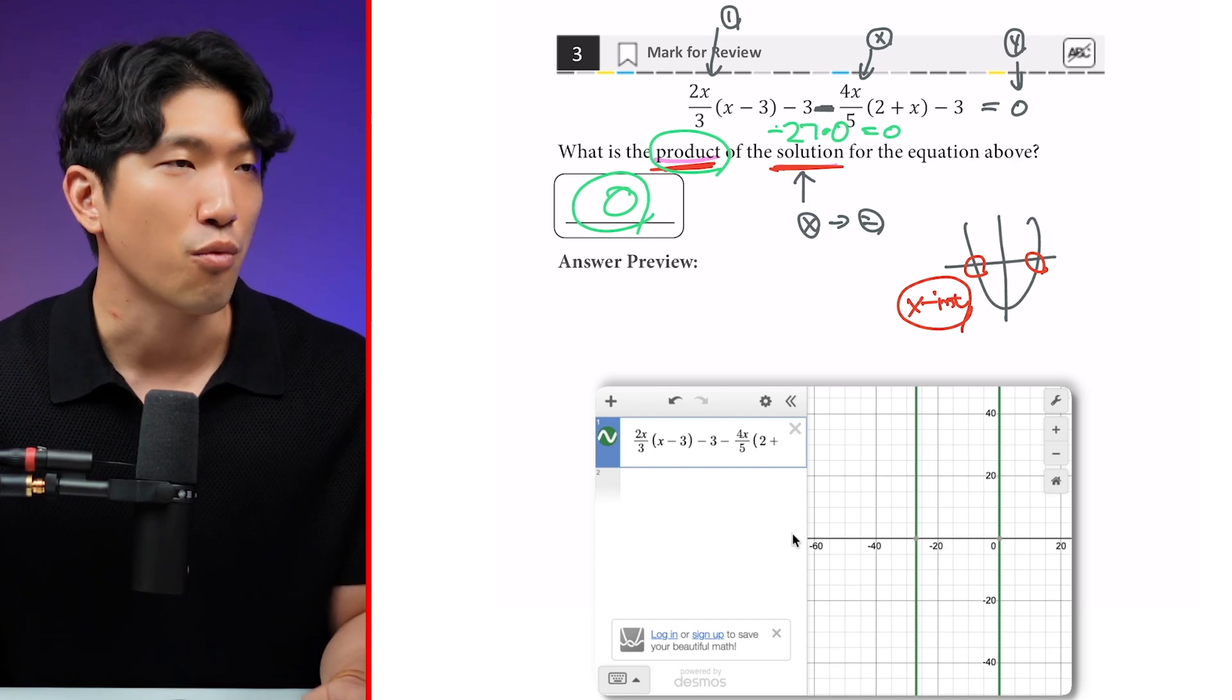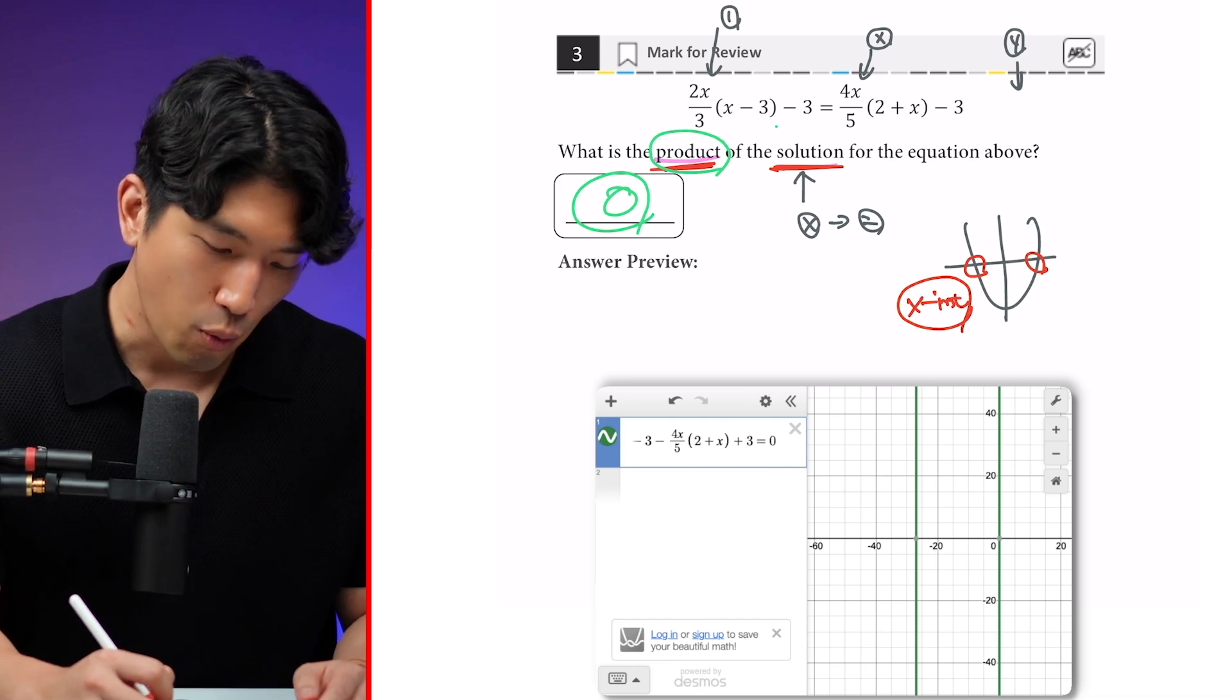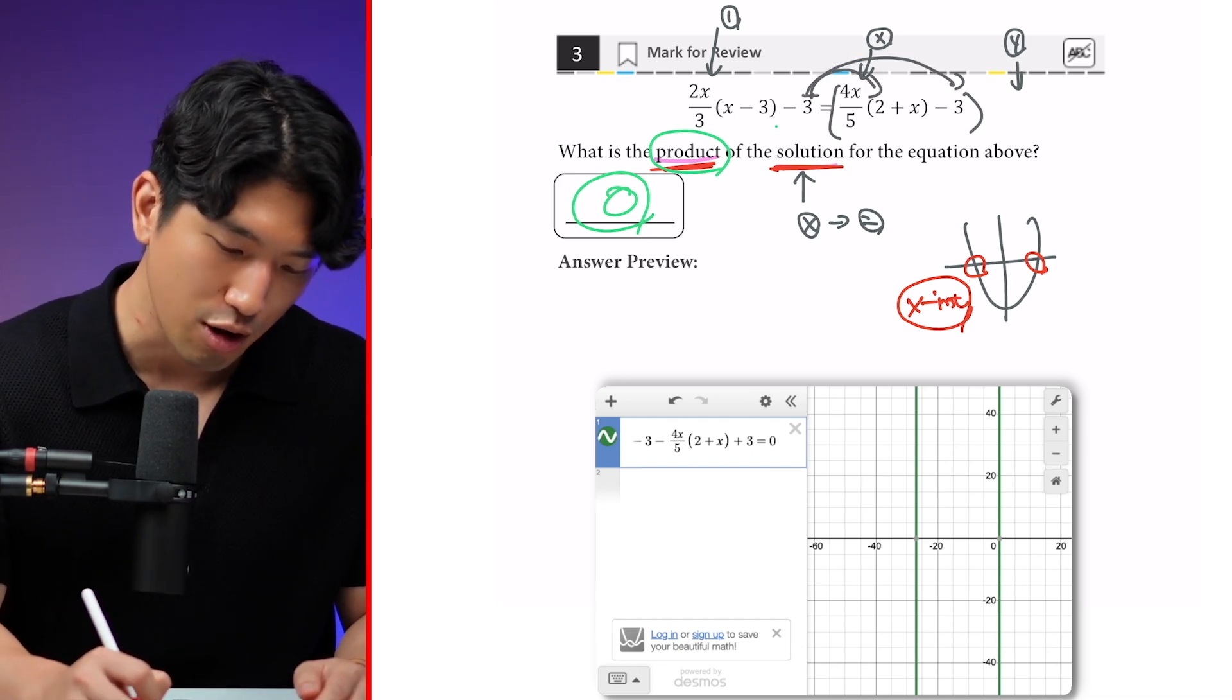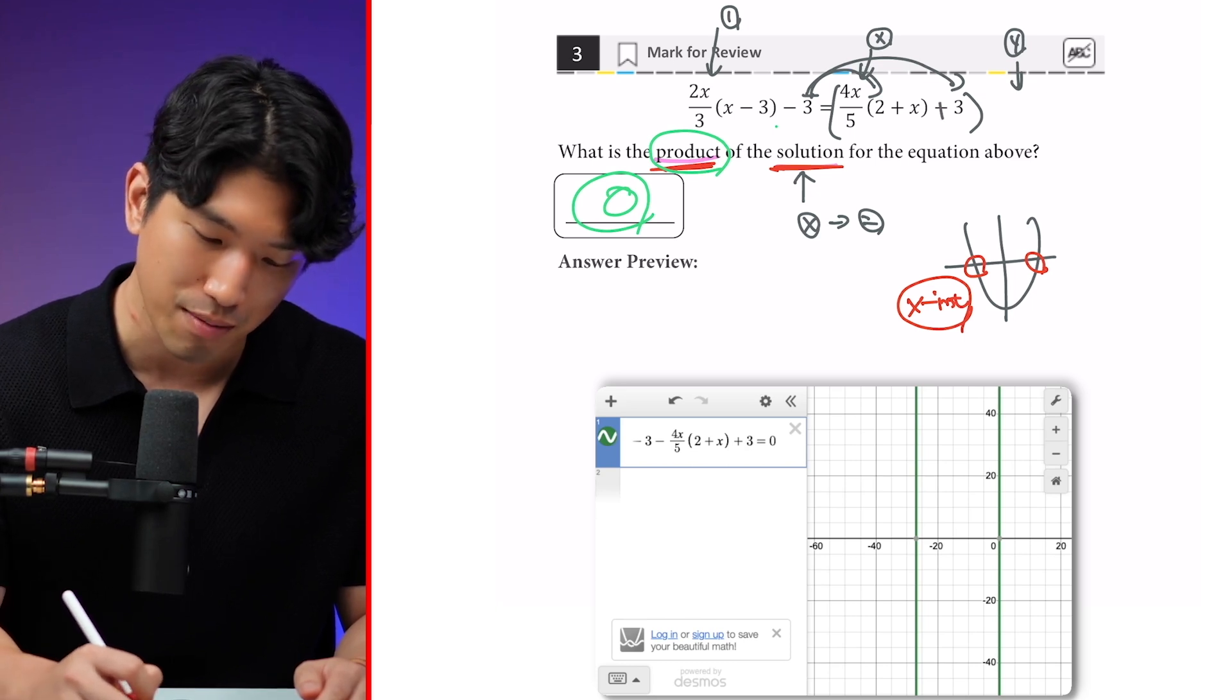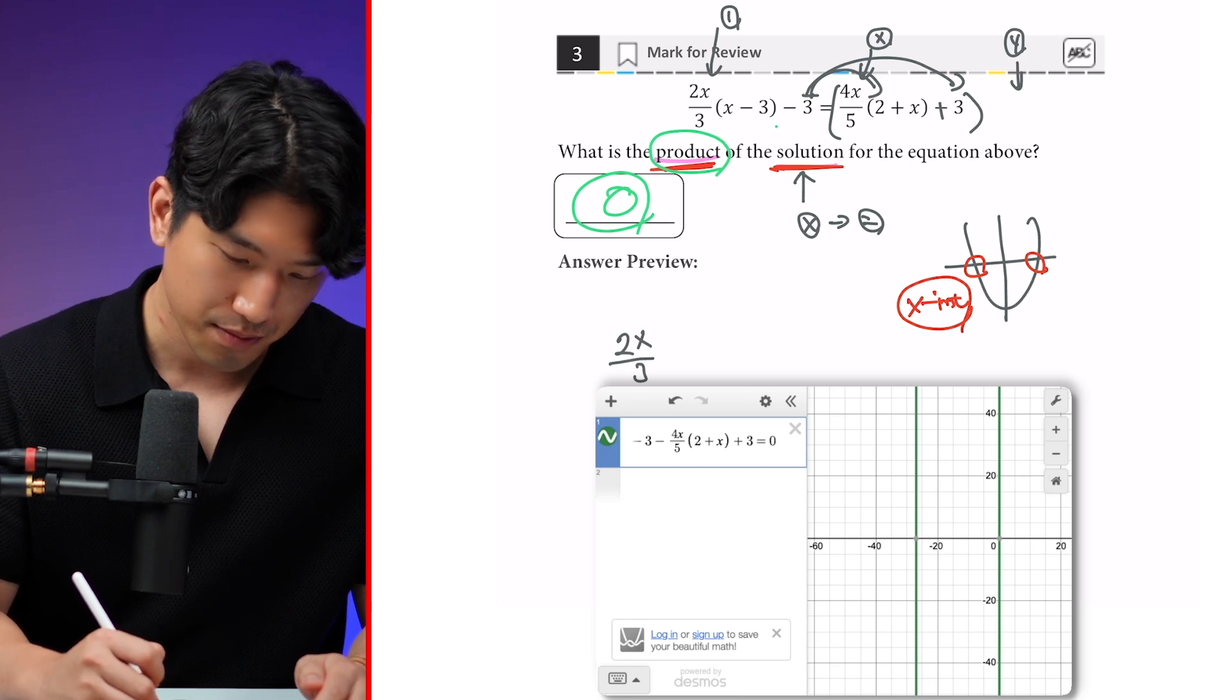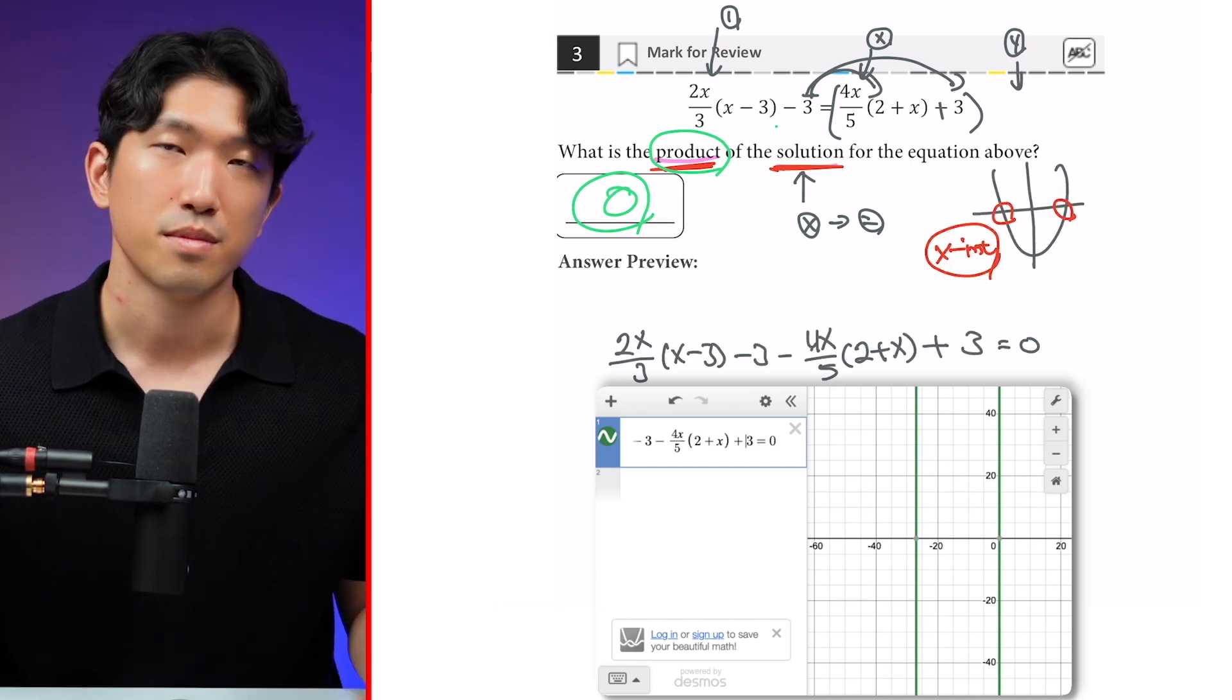And some of you guys might be wondering, John, when you graphed it, why did you do a plus 3 here? Because on the original equation, when you're subtracting the whole thing, this minus distributes to this and also to the -3, which becomes a positive 3 when you move it to the other side. So it's going to be 2x/3(x + 3). So does that make sense?